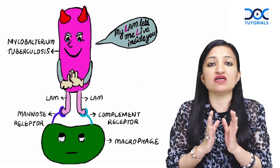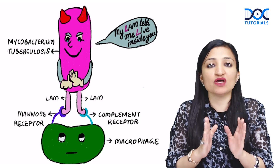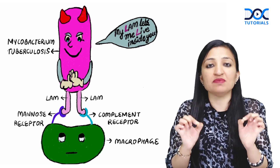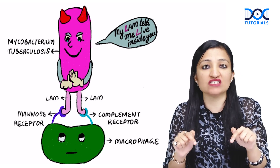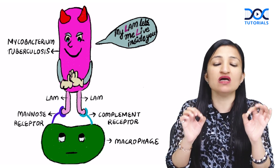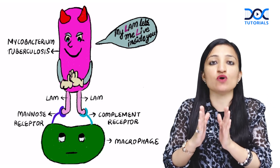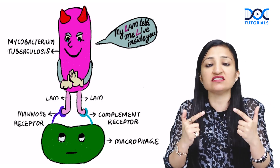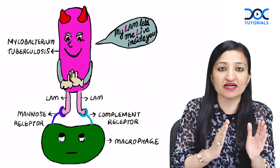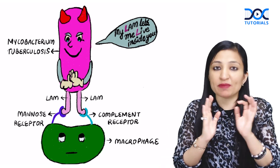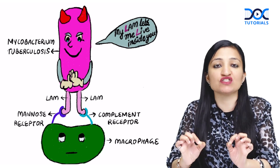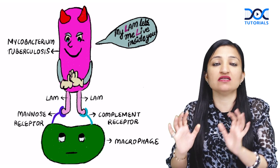Secondly, LAM is also going to be very important for MTB because LAM is going to make sure that MTB survives inside the macrophages. LAM inhibits the fusion of phagosome and lysosome because it is not going to allow an increase in intracellular calcium and also intracellular phosphatidyl inositol 3-phosphate. So basically LAM is going to make sure that MTB lives on inside the macrophages.